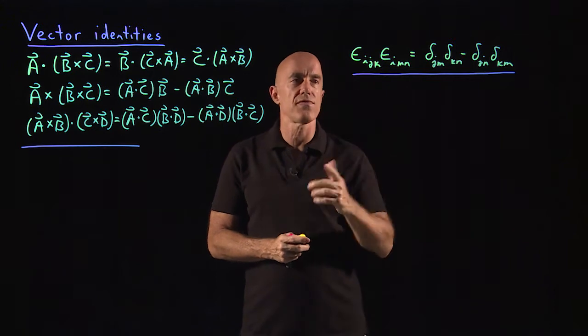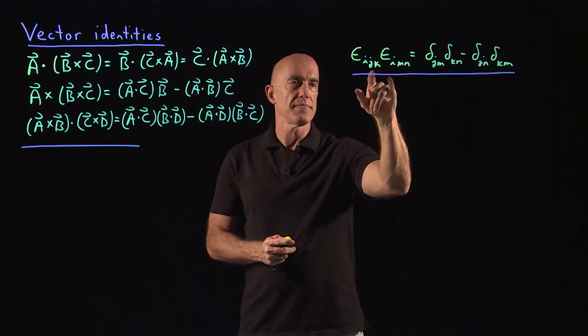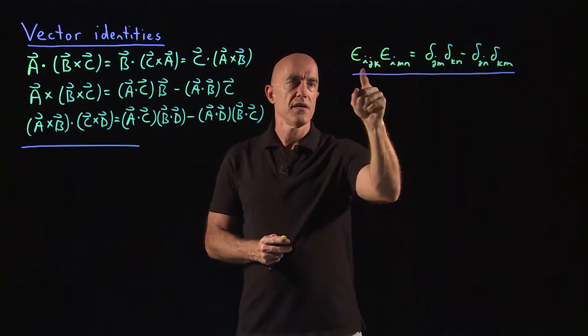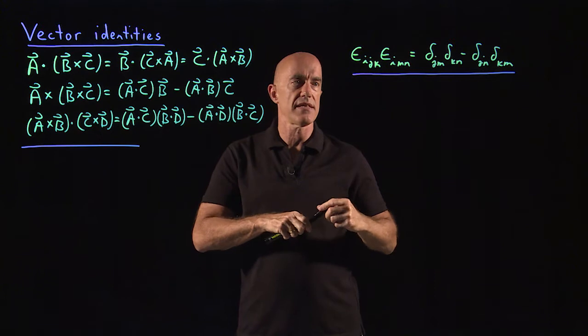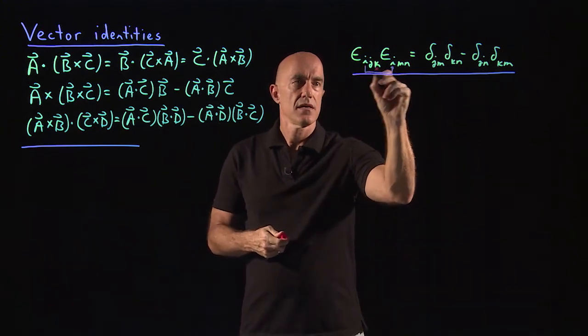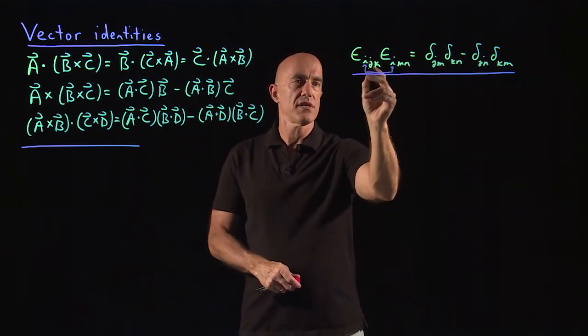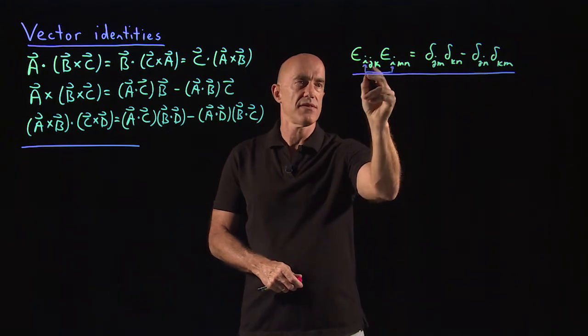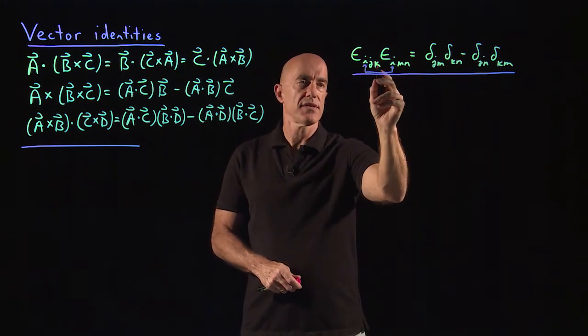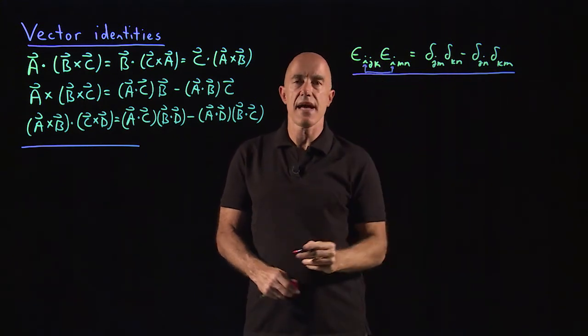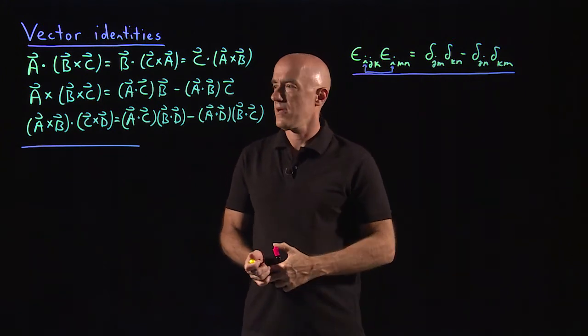An identity that you need to prove this is what happens when you contract the Levi-Civita tensor. So epsilon_ijk epsilon_imn. So here the first index is summed over, summed from i equals one to three. And then you get delta_jm delta_kn. So you see the symmetry here, j, m, k, n minus delta_jn delta_km. The opposite ordering. And that's an identity that also I asked you to prove in the problems.